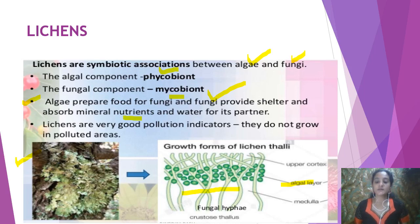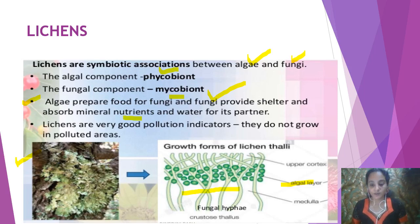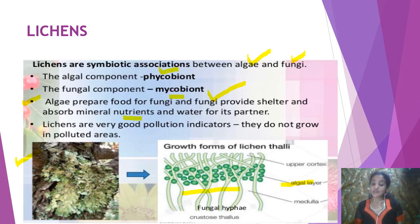Our kingdoms of Whittaker's classification are over: kingdom Monera, kingdom Protista, kingdom Fungi, kingdom Plantae, and kingdom Animalia. The virus, since it has not been included in any kingdom, we have studied separately. We saw the structure of the virus — especially the tobacco mosaic virus and the bacteriophage — and finally we discussed lichens. Lichens are indicators of pollution. Let's hope for a Delhi with lots of lichen, because we need to reduce our pollution. Thank you students, have a nice day — go through this topic.